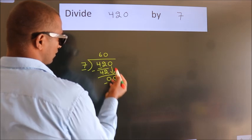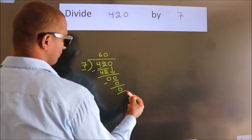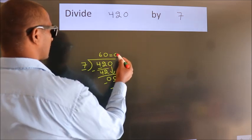After this, no more numbers to bring down. And we got remainder 0. So this is our quotient.